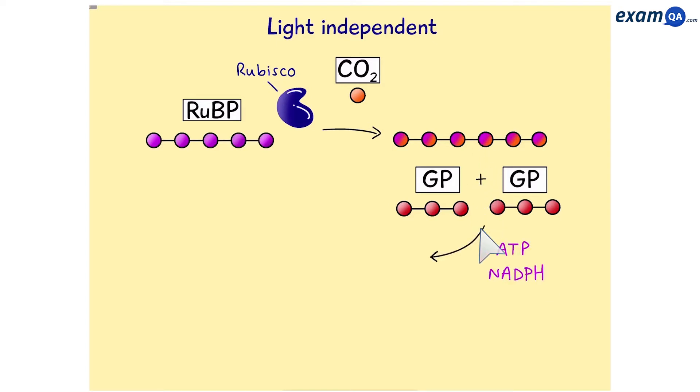Then ATP and NADPH help to convert these GPs into TPs. Of course, during this process, the ATP and NADPH get broken down into the following products. These go back to the thylakoid to help take part in the light-dependent reaction. Since we have 2 GPs turning into 2 TPs, we're going to require 2 lots of ATP and 2 NADPHs.